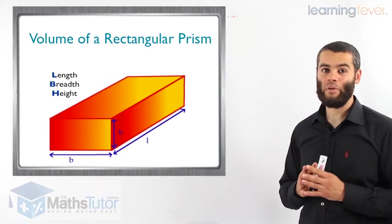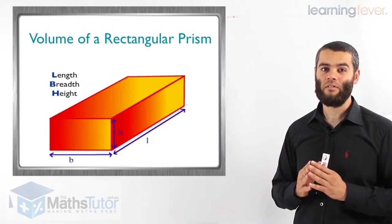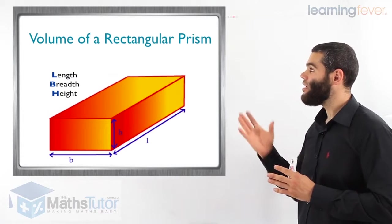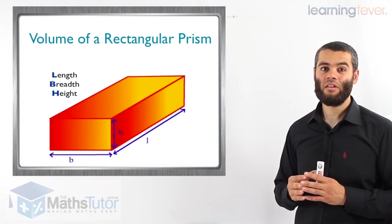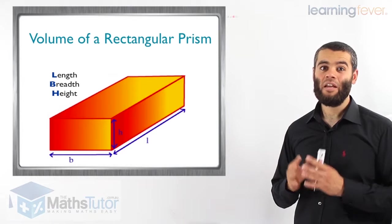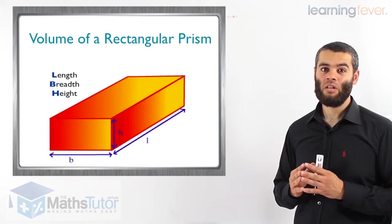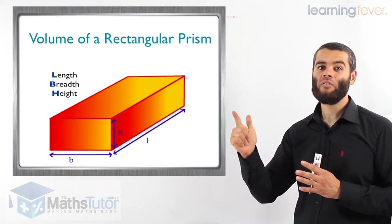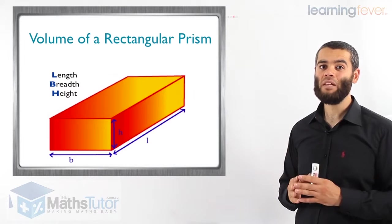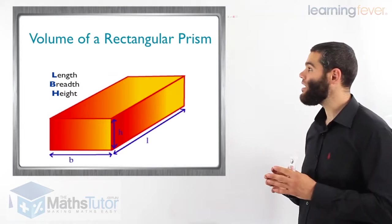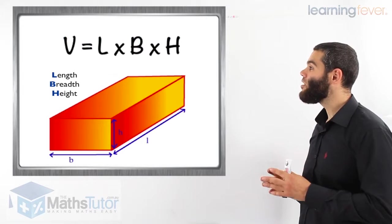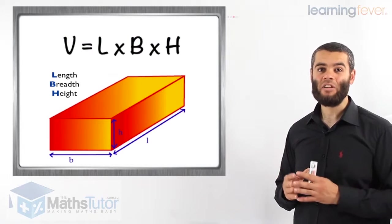The volume of a rectangular prism, we'll start with that one first. The rectangular prism has length, it has breadth, and it has height. So all of a sudden it is three-dimensional. The length, the breadth, and the height - three dimensions make up the volume. So the formula for the rectangular prism is V for volume equals length times breadth times height.